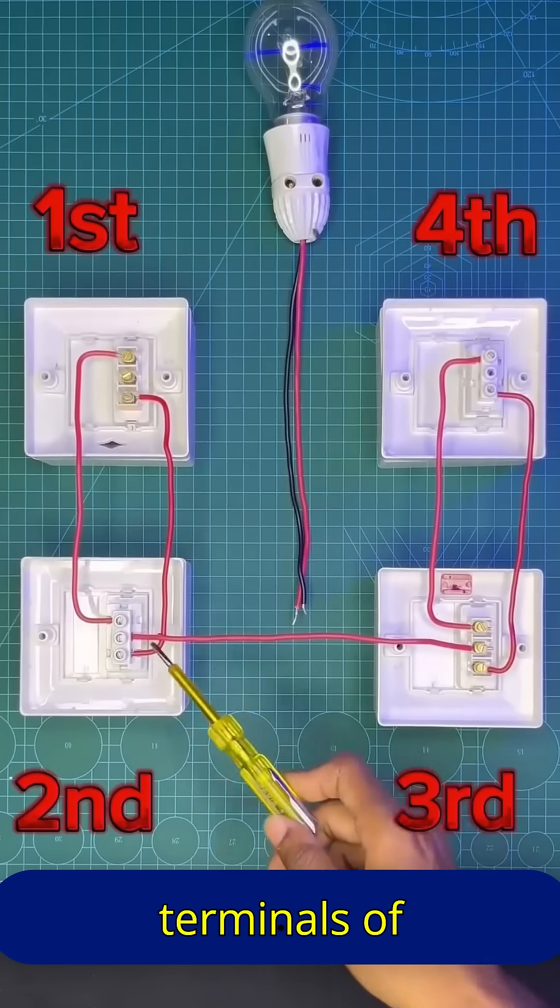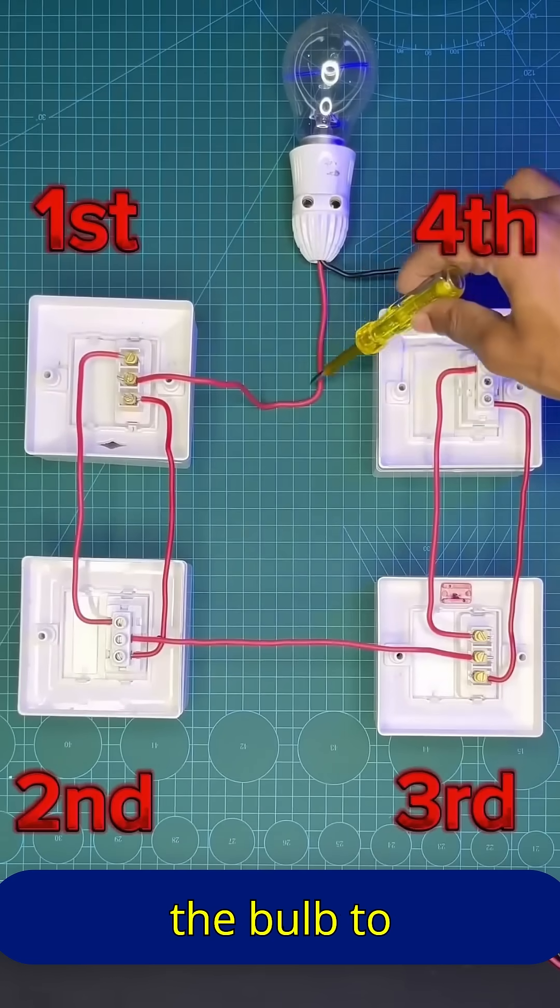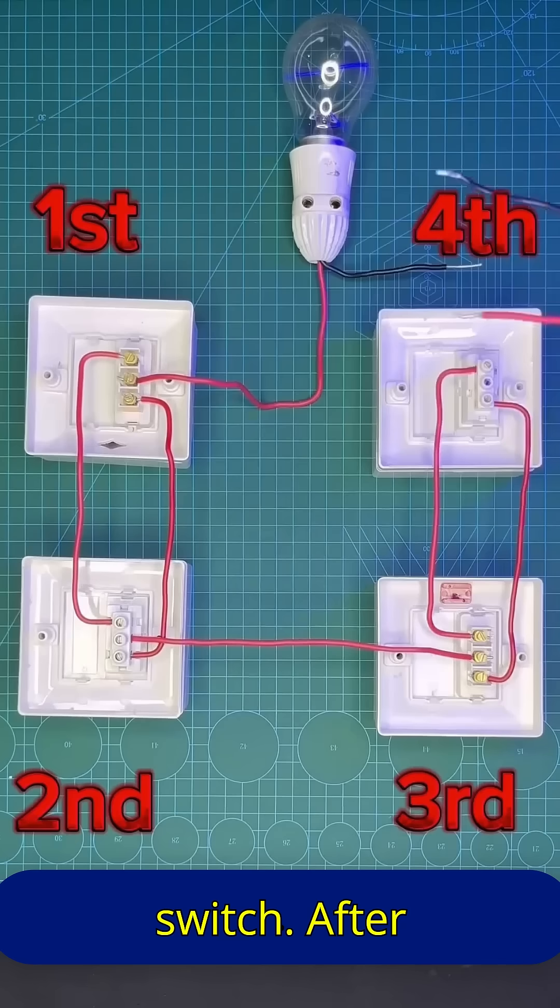Once that's done, connect the middle terminals of the second and third switches together. Now, to connect the bulb, attach one wire of the bulb to the middle terminal of the first switch.